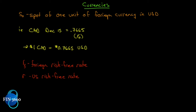Currencies can be tricky because we're dealing with two things: a foreign currency and a U.S. currency, so we have to convert from one to another. Everything we've done so far has been priced in a constant currency. Currencies are traded in pairs, so our terminology needs to be very specific. S₀ is the spot price of one unit of the foreign currency in U.S. dollars, and F₀ will also be quoted in U.S. dollars. For example, the CAD futures contract for December 15th is quoted at 0.7665.